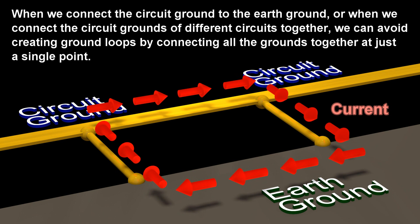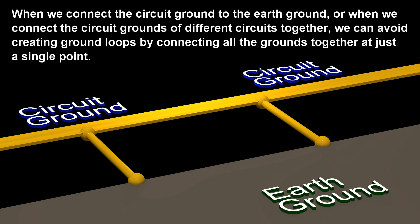When we connect the circuit ground to the earth ground, or when we connect the circuit grounds of different circuits together, we can avoid creating ground loops by connecting all the grounds together at just a single point.